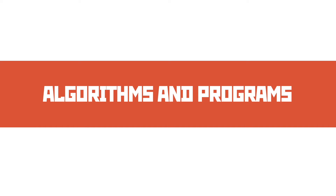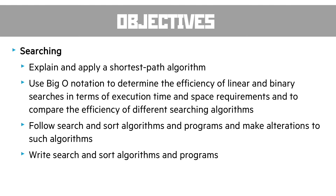Algorithms and programs, part two. The first objective in this video is about searching. We need to explain and apply a shortest path algorithm — the one we'll pick is Dijkstra's. We're going to use Big O to determine the efficiency of linear and binary searches in terms of execution time and space requirements, and to compare the efficiency of different types of search algorithms. We'll follow, alter, and write search and sort algorithms and programs.